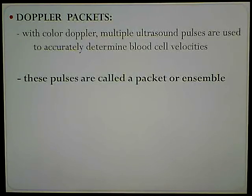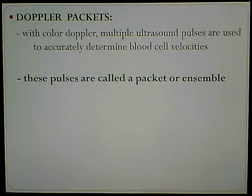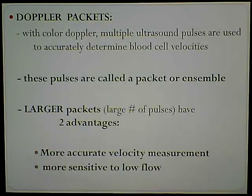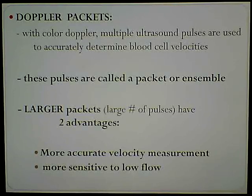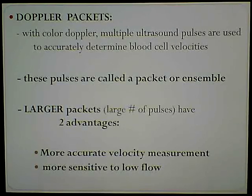Doppler packets - this is kind of like how much information we want to use to determine these blood cell velocities. With color Doppler, multiple ultrasound pulses are used to accurately determine blood cell velocities. These pulses are called a packet or an ensemble. The larger the packets, or large number of pulses, have two advantages: we get more accurate velocity measurements, and it becomes more sensitive to low flow the larger the number of pulses in these packets.